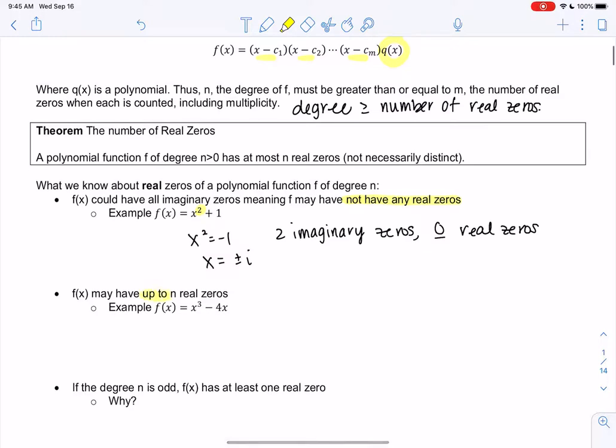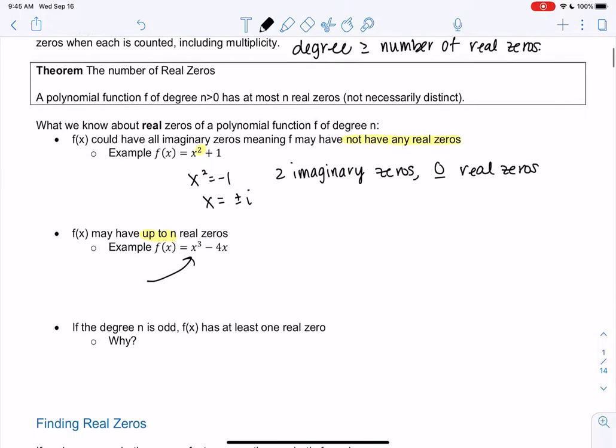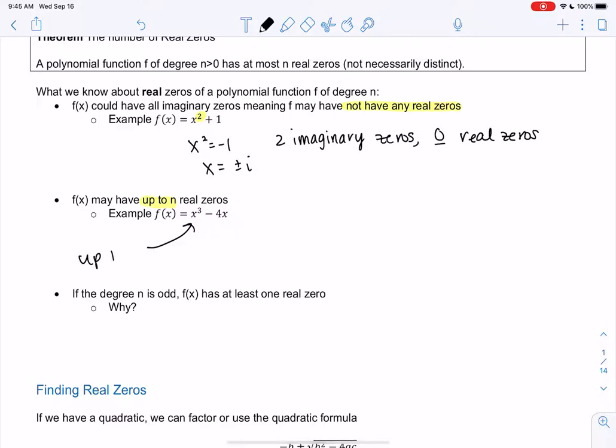It's possible to have up to n. So this tells me this next polynomial, x cubed minus 4x, can have up to three real zeros. It doesn't mean it has three real zeros, but let's factor it to check. So we can factor out an x, and then we get x squared minus 4, which is x plus 2x minus 2. So this one has three real zeros. Zero, negative 2, and 2. It wouldn't be possible to have 4. We can't go past 3 for the power of 3.